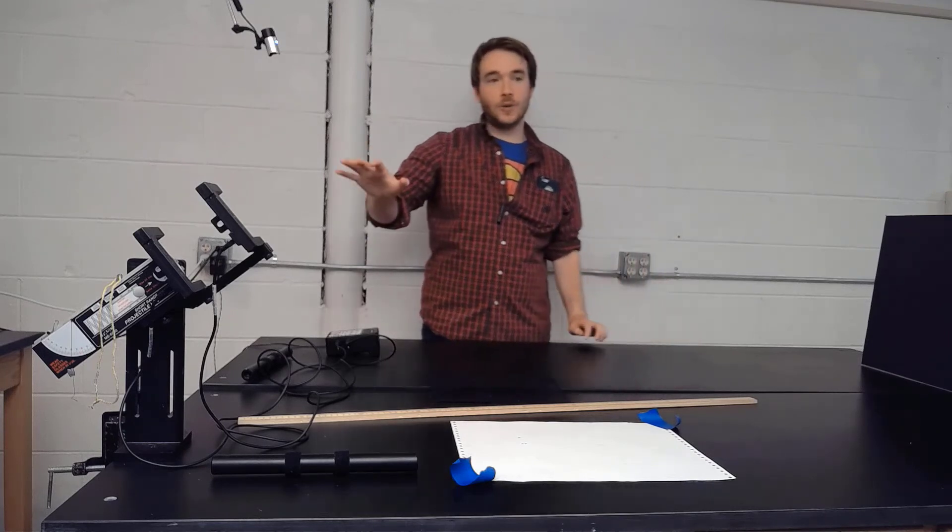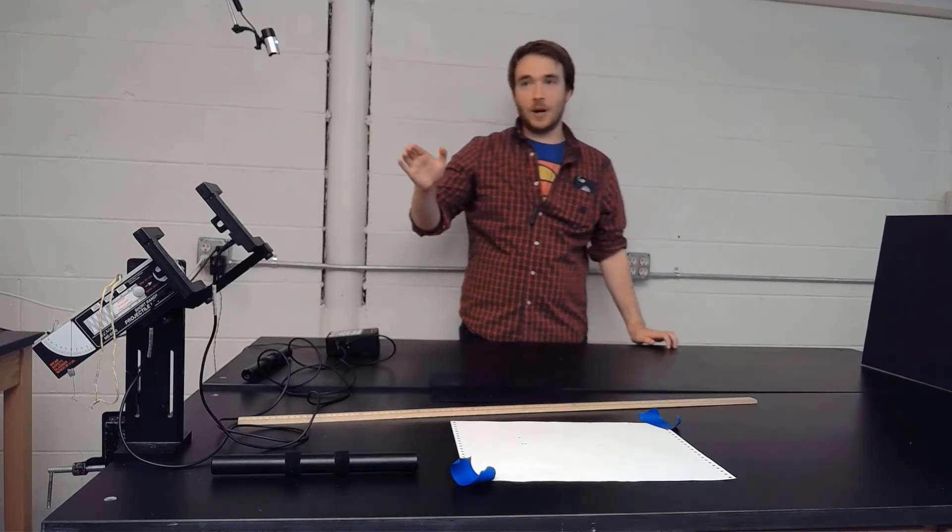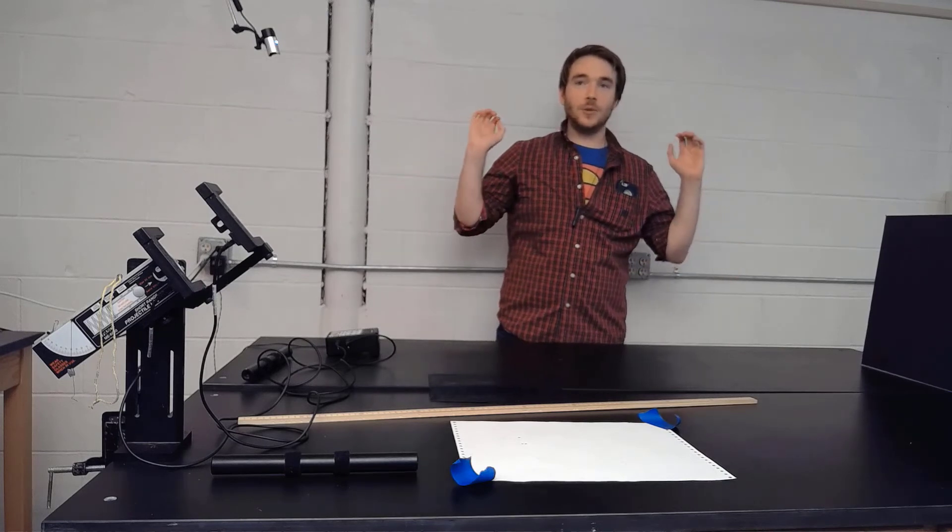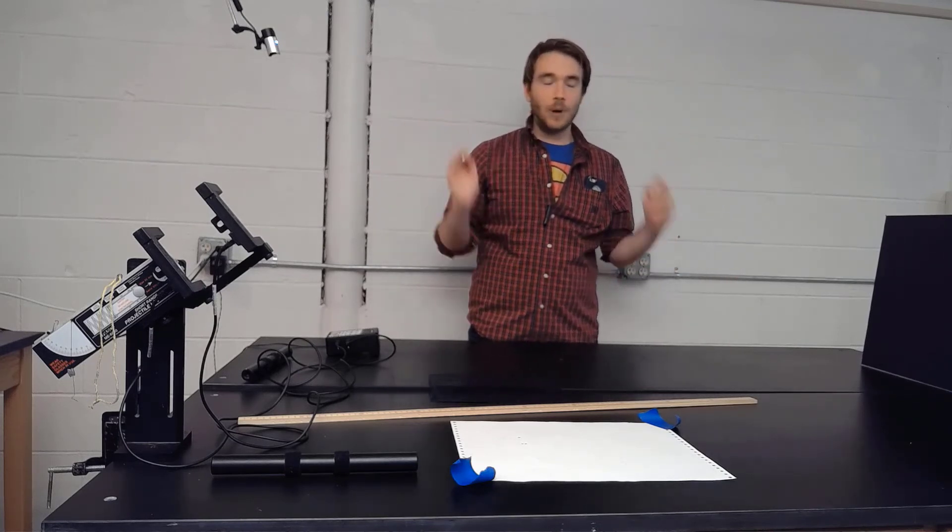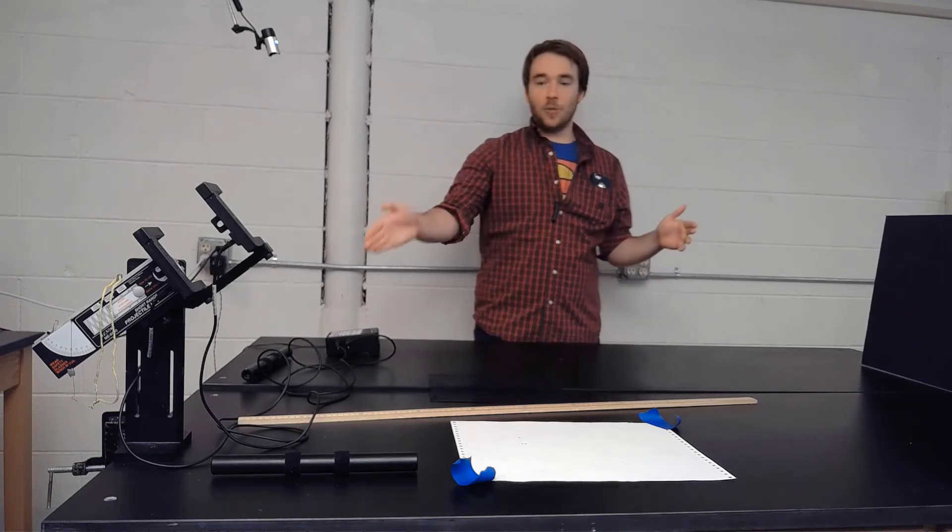And now the point of this part of the experiment, our final part, is to see if we can use that trigonometry to now guess, using the different components of the velocity, where the projectile is going to end up.